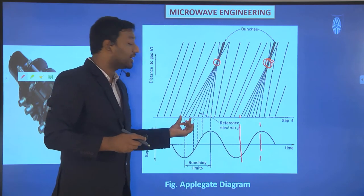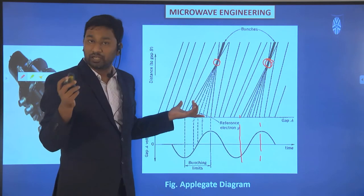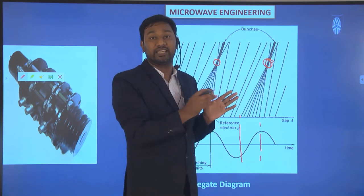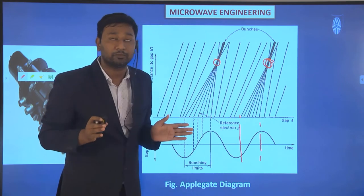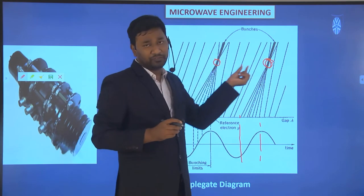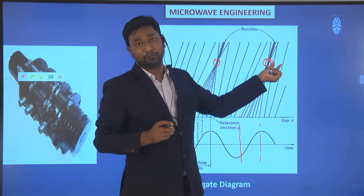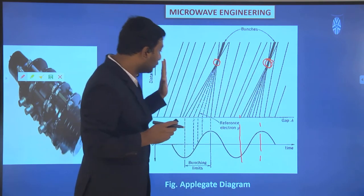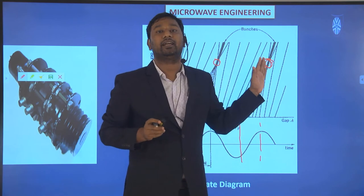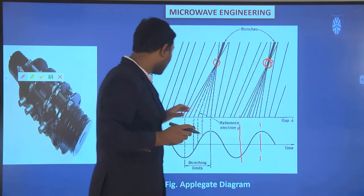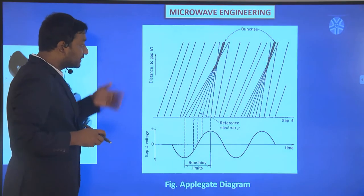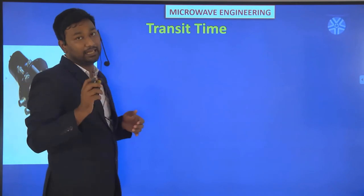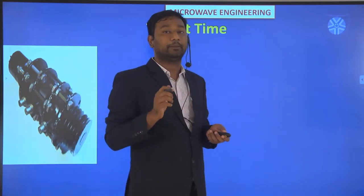This comes under the velocity modulation process. Whenever velocity modulation takes place, bunching of electrons occurs. Due to that bunching of the electron beam, we can draw the applicate diagram. Those are the two-cavity klystron amplifier characteristics.